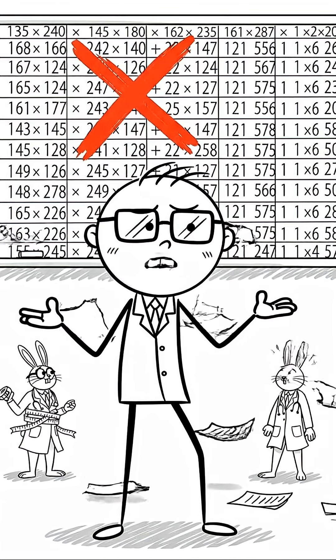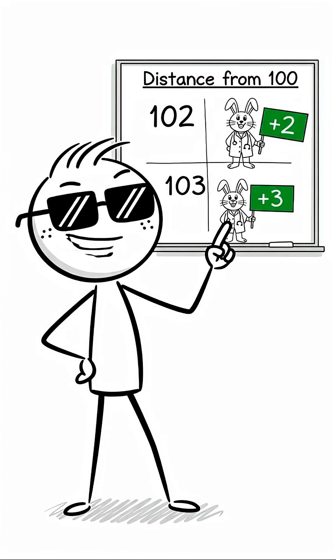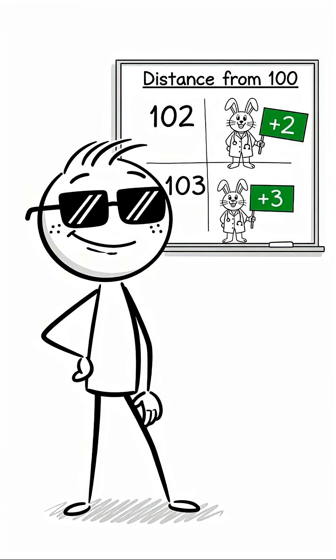You'll run out of paper and patience. Let's use the base 100 trick. First, ask yourself, how far are they from 100? 102 is plus two. 103 is plus three.